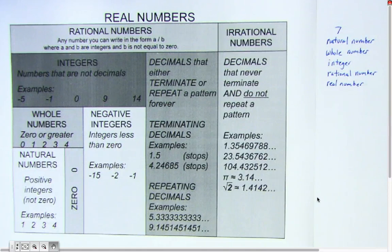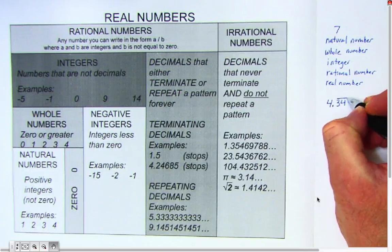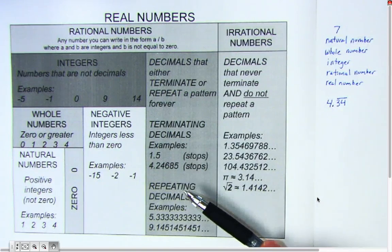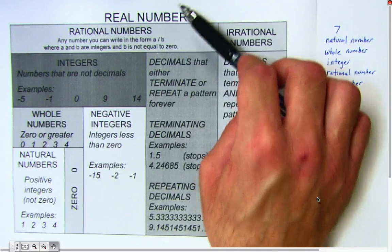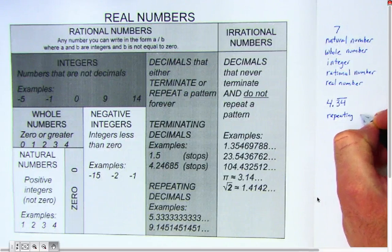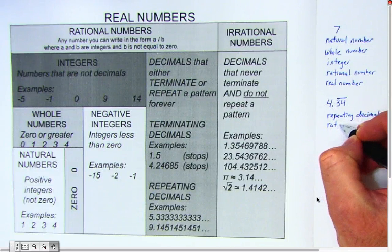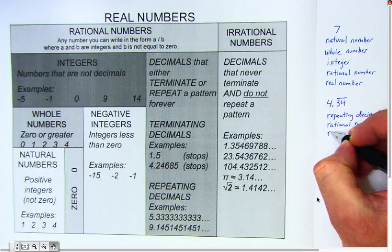Let's look at 4.34 repeating, where the 3 and the 4 repeat — so it's 4.343434... and so on. This falls under the category of repeating decimals. It's also a rational number, and it's also a real number.